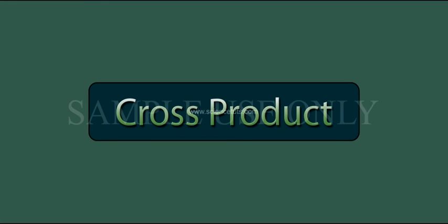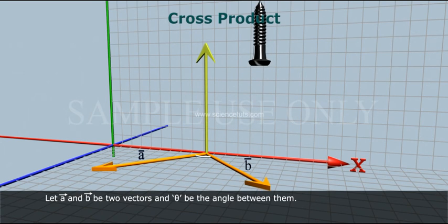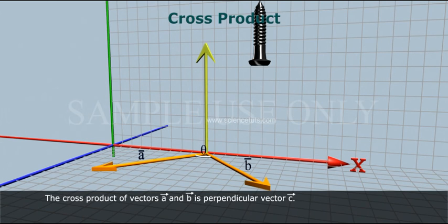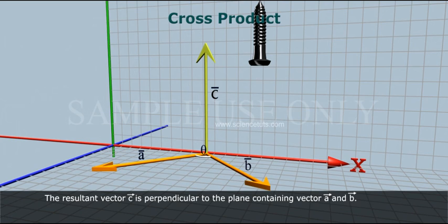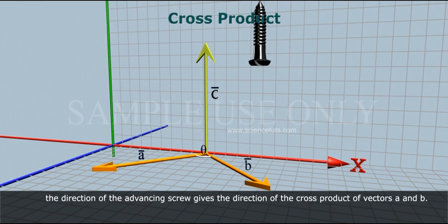Cross product — right hand screw rule. Let A bar and B bar be two vectors and theta be the angle between them. The magnitude of the cross product of A bar and B bar is modulus of A bar into modulus of B bar into sin theta. The cross product of vectors A bar and B bar is a perpendicular vector C bar, which is perpendicular to the plane containing A bar and B bar. If a right-handed screw is rotated from vector A to vector B through a small angle, the direction of the advancing screw gives the direction of the cross product of vectors A and B.